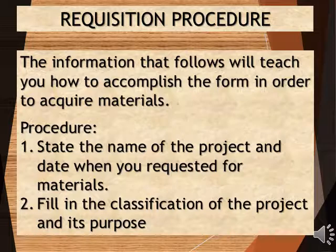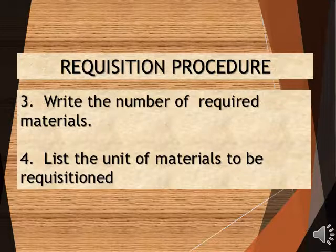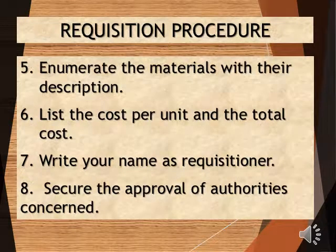No. 2: Fill in the classification of the project and its purpose. No. 3: Write the number of required materials. No. 4: List the unit of materials to be requisitioned. Next is to enumerate the materials with their description. Then list the cost per unit and the total cost.